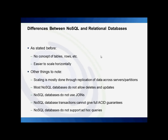Some quick differences between NoSQL and relational databases: as stated before, NoSQL databases don't have any concept of rows, tables, or that sort of thing, and they're easier to scale horizontally. Scaling is mostly done through the replication of data across servers or partitions. Most NoSQL databases do not allow deletes and updates. NoSQL databases don't use joins for their selects, and NoSQL also doesn't use SQL to pull data — it mostly uses various coding languages like C or Java. NoSQL database transactions can't give full ACID guarantees, and NoSQL databases do not support ad-hoc queries.